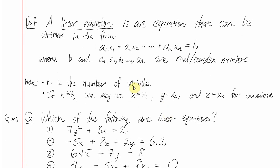I'm using Adobe Acrobat Reader to scroll through the PDF of my notes, which I can post. First, a definition: a linear equation is an equation that can be written in the form a₁x₁ + a₂x₂ + … + aₙxₙ = b, where a₁ through aₙ are n real numbers (sometimes complex), and b is also real or complex. We'll typically stick to real numbers. If there are three or fewer variables, we'll often just use x, y, and z for convenience.